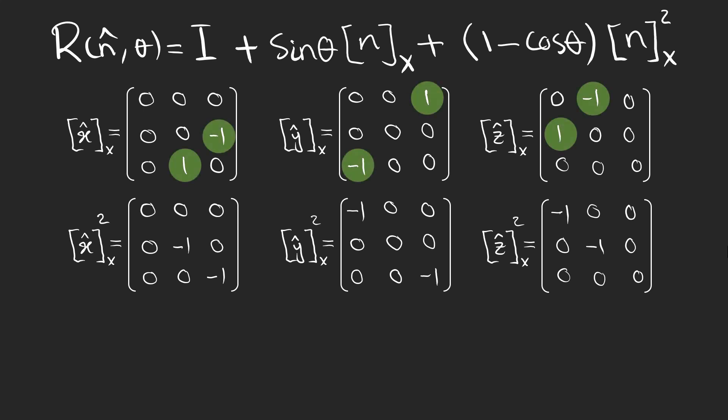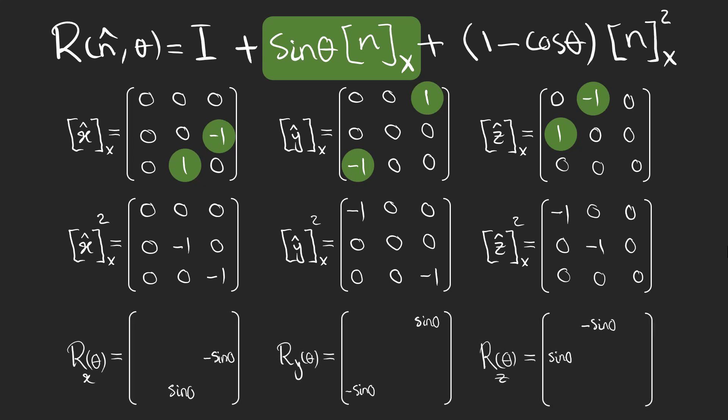Now take a look at these elements. They all have to be multiplied by sine theta. And I guess you can remember that on these elements we had either sine of theta or minus sine of theta. Also for these three elements and because of the first term, we will only see elements equal to 1 in the matrix.